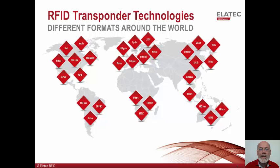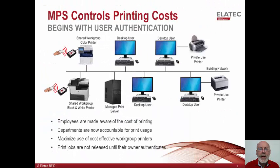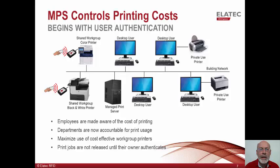Employees travel from site to site and expect their print jobs to be available anywhere they work within the corporate network. This slide shows the changes which are typically made with the introduction of managed printing. First, a managed print server is introduced into the environment. All jobs are then restricted from printing unless the server knows who the job belongs to and unless that job owner actually releases it for printing. Workgroup and network printers are outfitted with proximity card readers, which use the employee's badge to authenticate them at the printer. Users can then release and print their jobs.